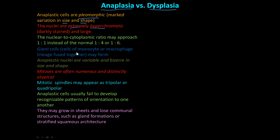Giant cells may appear, which are monocytes and macrophages fused together. Anaplastic nuclei are variable and bizarre in size and shape. Mitoses are often numerous and distinctly atypical — mitotic spindles appear as tripolar or quadrupolar. Anaplastic cells usually fail to develop recognizable patterns of orientation to one another, and may grow in sheets, losing structures like glandular formations and stratified squamous architecture.